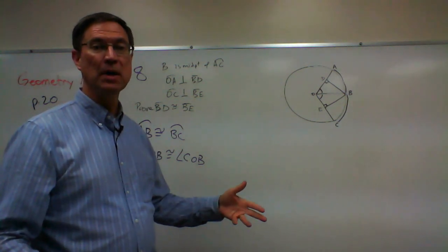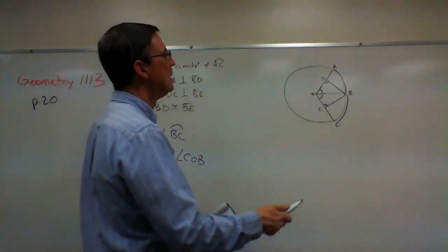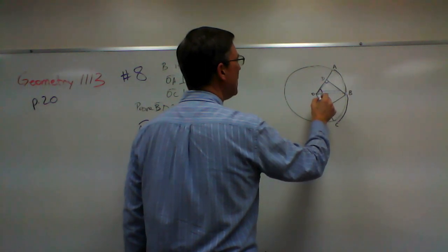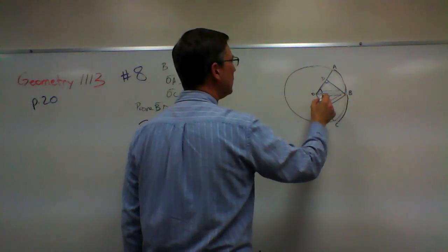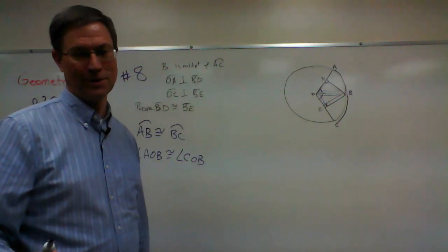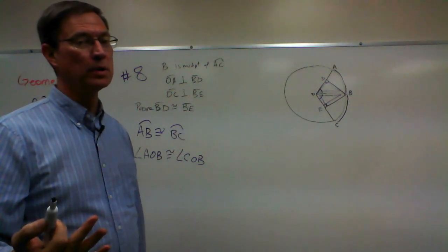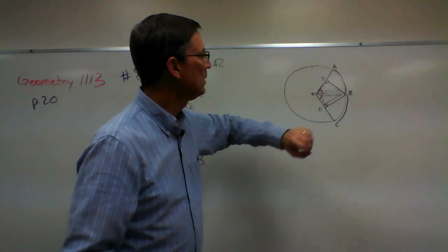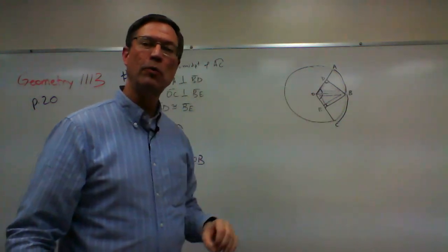duh, we know this—but if those are right angles, then that means that this triangle and this triangle are right triangles. Now that's important. So we actually state first that we have right angles, then we can state that we have right triangles.